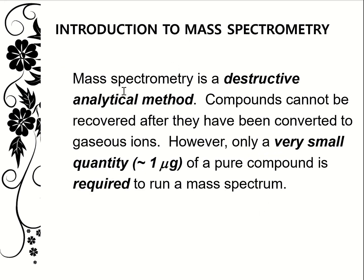Mass spectrometry is a destructive analytical method — compounds cannot be recovered after they have been converted to gaseous ions. However, thankfully only a very small quantity, roughly one microgram of a pure sample, is required to run a mass spectrum.